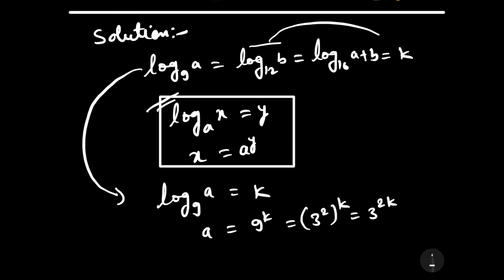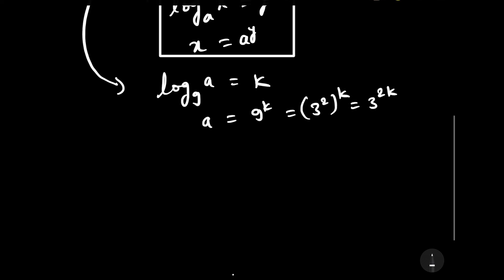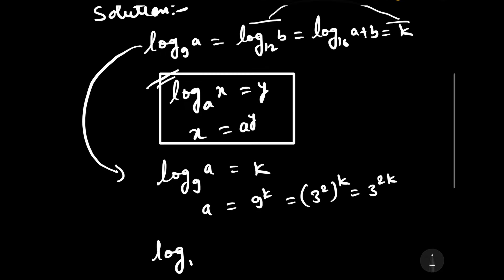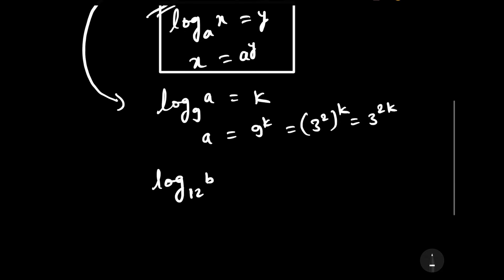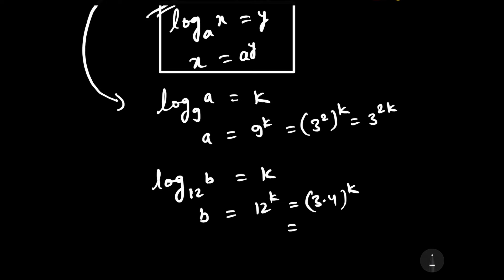Now let us take another equality: log 12 base B equals k. Then B equals 12 to the power k. And 12 can be written as 3 times 4, so B equals 3 to the power k times 4 to the power k, which is 3 to the power k times 2 to the power 2k.